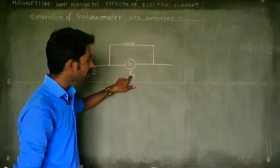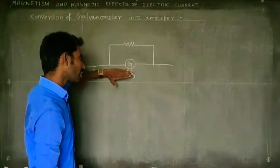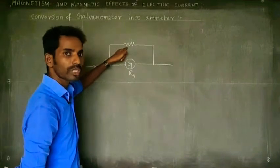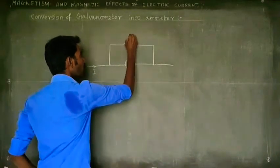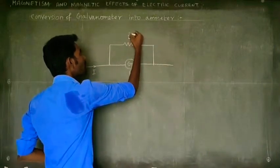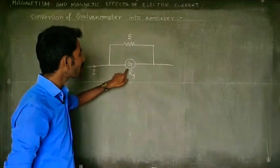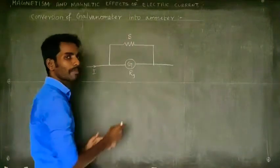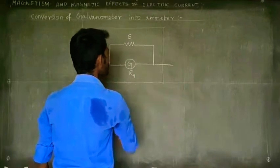We denote the galvanometer resistance as RG — G for galvanometer, R for resistance. We have galvanometer resistance RG. The parallel resistance connected to the galvanometer is called shunt resistance. In order to convert the galvanometer into an ammeter, the shunt resistance S is connected in parallel to the galvanometer, and the whole arrangement is considered as the ammeter.